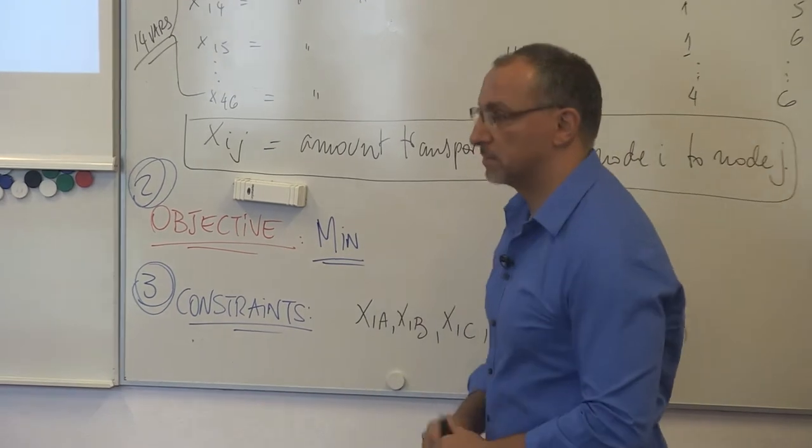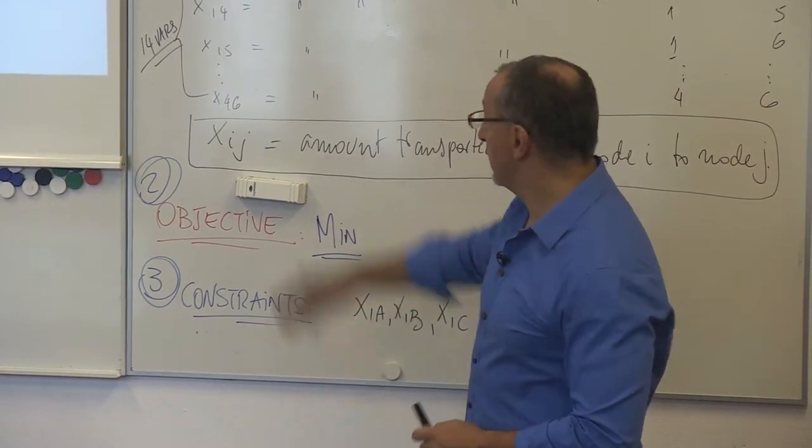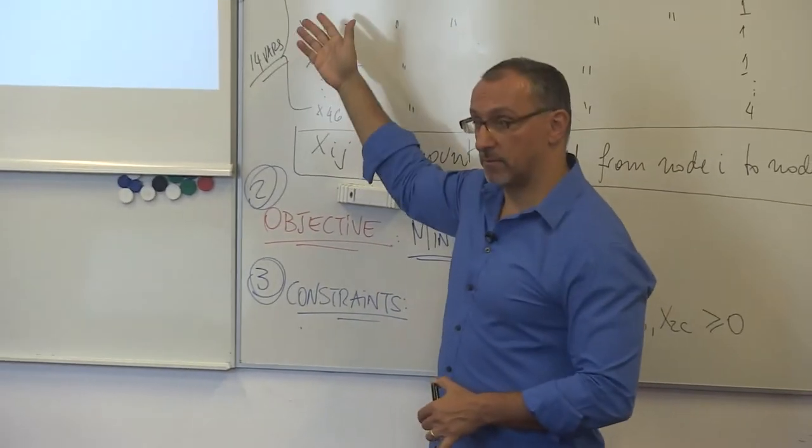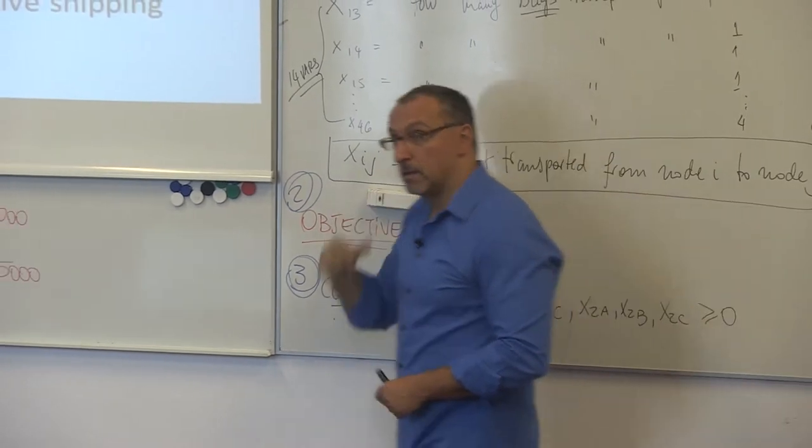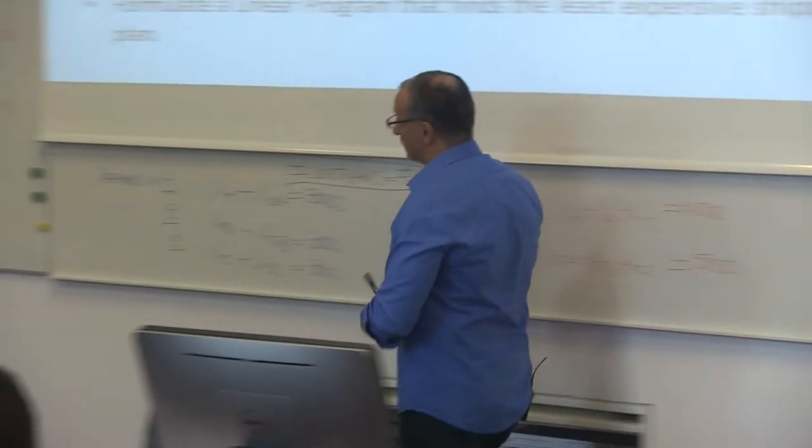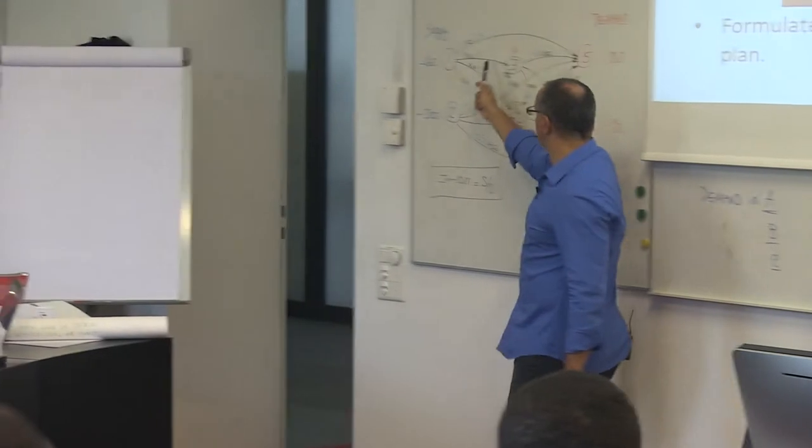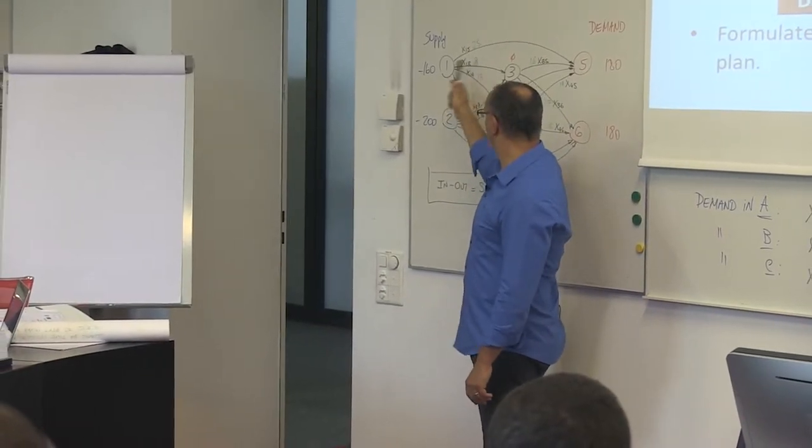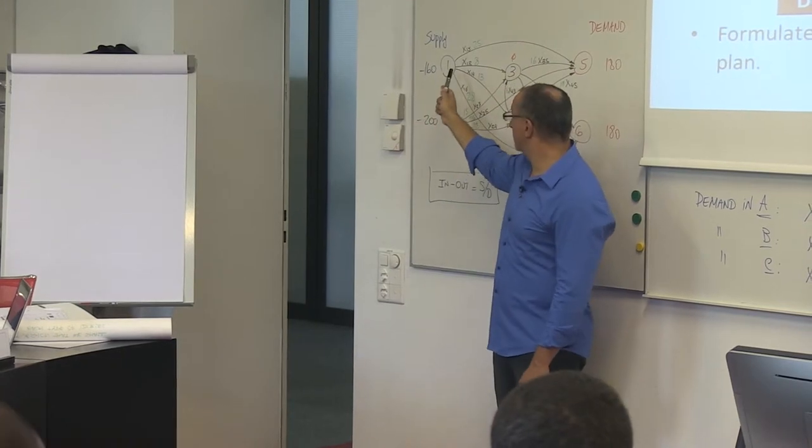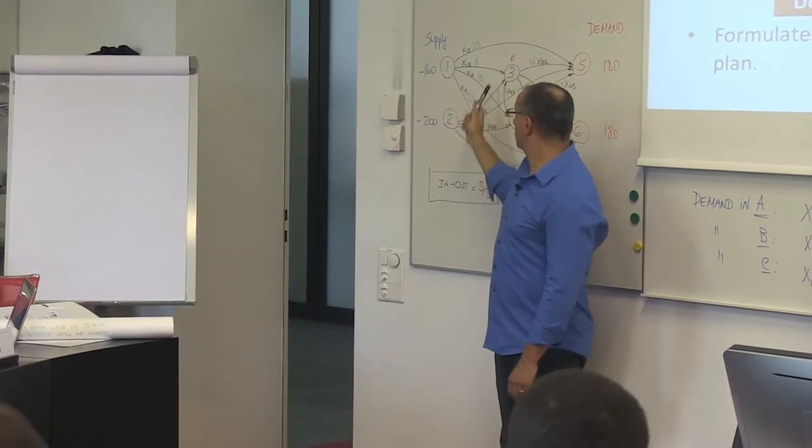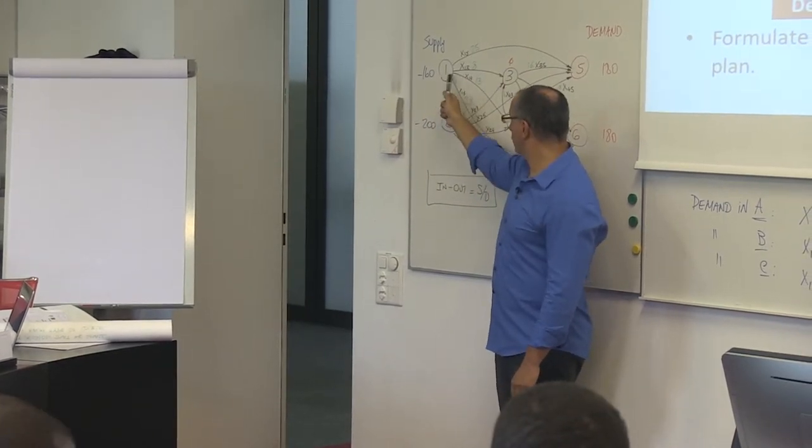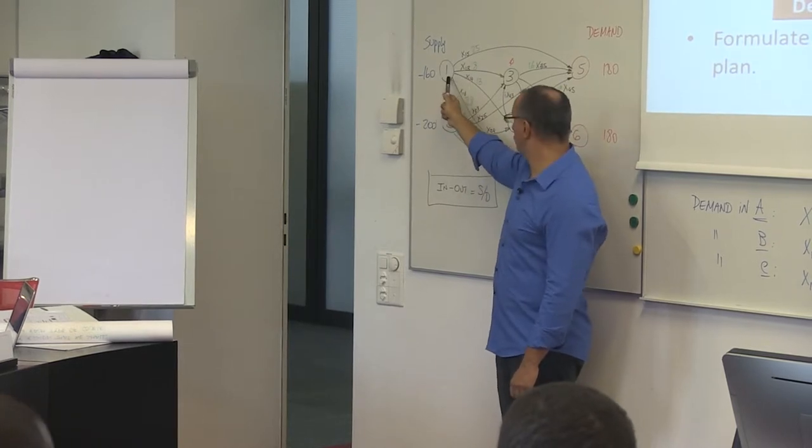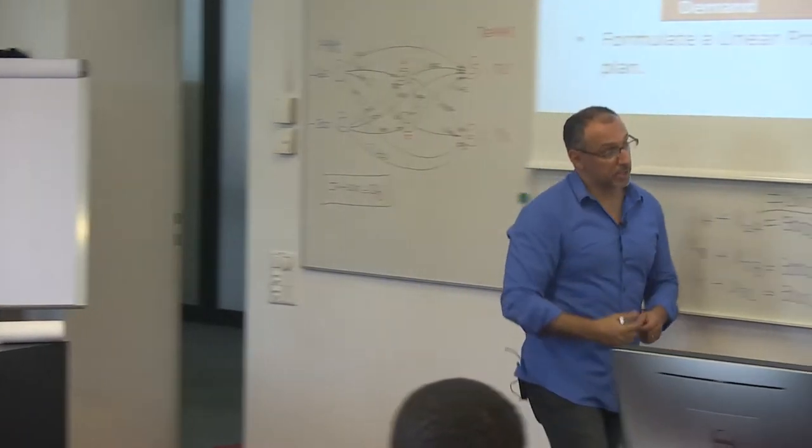And the way to think about this is we have the cost and the amount transported, so this is the total cost of transporting this amount from 1 to 3. This is the total cost of transporting X_14 from 1 to 4. So we just add the independent parts.